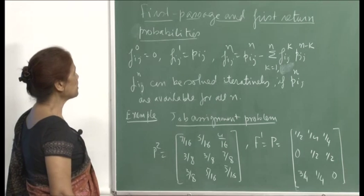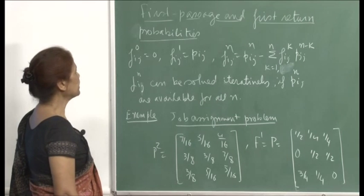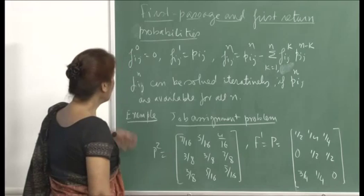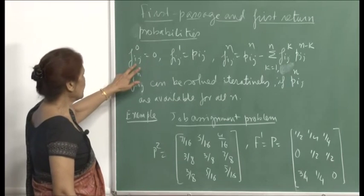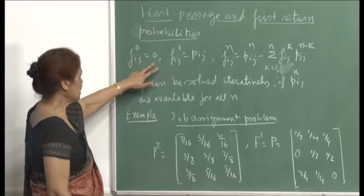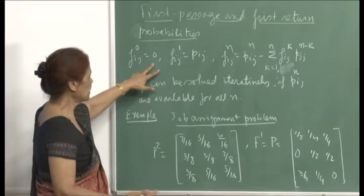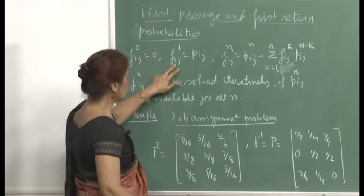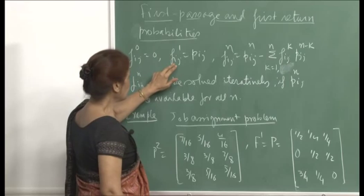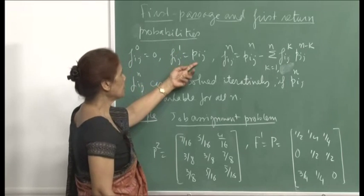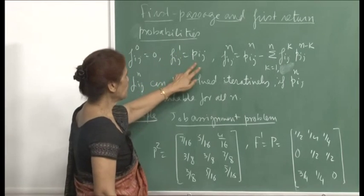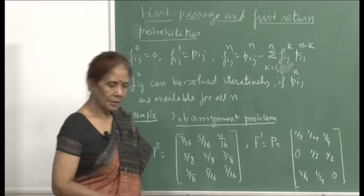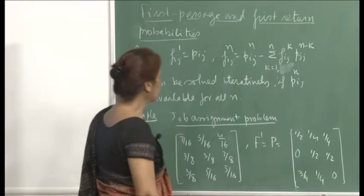We will continue our discussion with first passage and first return probabilities, how to compute them. Recall that f_ij(0) will be 0, because there cannot be any transition in 0 time. Then f_ij(1), the first time j is reached from i in one step, will simply be p_ij. So the first step transition probabilities are your first time transition probabilities also.